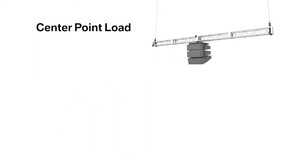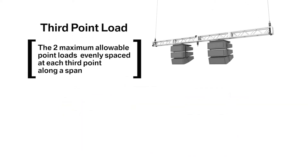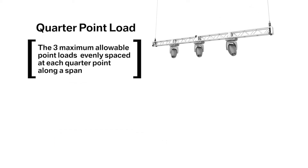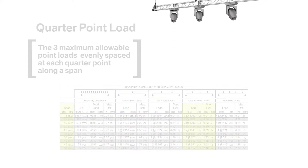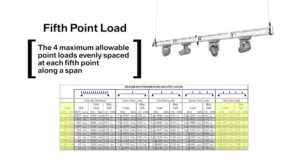The center point load reported in the table is the maximum allowable point load applied at the center of a span. The third point loads reported are the two maximum allowable point loads evenly spaced at each third point along the span. Quarter point loads reported are the three maximum allowable point loads evenly spaced at each quarter point along a span. Fifth point loads reported are the four maximum allowable point loads evenly spaced at each fifth point along a span.